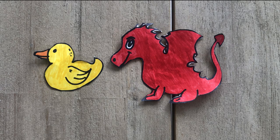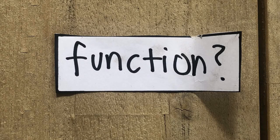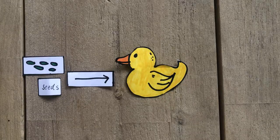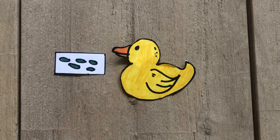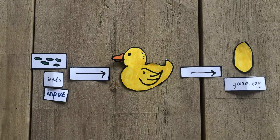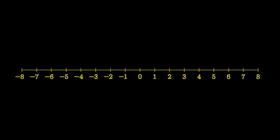Before we jump into ducks, duck-eating dragons, and composite functions, it's important to understand what the word function even means. Imagine a duck. This duck is wonderful — it does amazing things. You give it some seeds and it produces a golden egg. You give it more seeds, it produces more golden eggs. In this case, you can think of the number of seeds as the input, the duck as the function itself, and the golden egg as the output. A function is exactly that — you give it some input number and it produces an output number. An analogous way to think of functions is that it maps any point on a number line to one and only one other point on the number line.